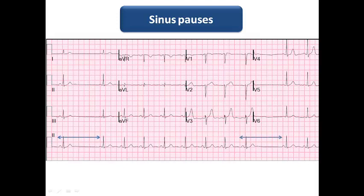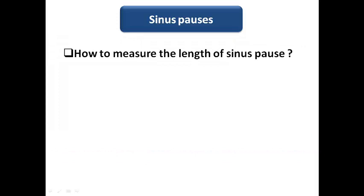The term sinus pause explains itself — there is an intermittent pause in SA node function. Unlike sinus bradycardia where the SA node works continuously but slowly, here the SA node suddenly and intermittently stops its pacing. On the ECG, I see a P wave, QRS complex, T wave, then a pause with no electrical activity, possibly followed by an escape rhythm, and then the SA node resumes. To be accurate, I need to measure the length of the sinus pause and mention it when commenting on an ECG or Holter.